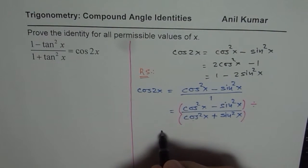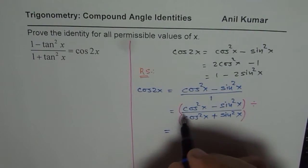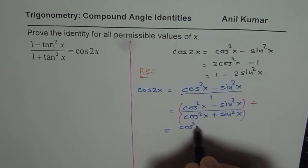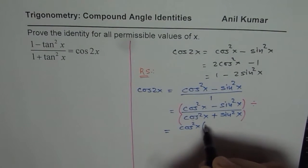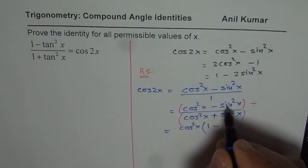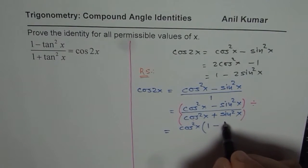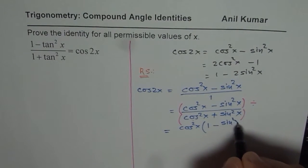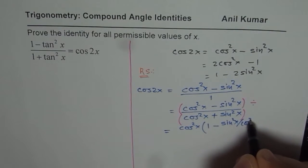So what we will do here is we will factor cos square x. So we can write this as equal to cos square x. And when you factor cos square x, you get 1 minus sin square x over cos square x. So we get sin square x over cos square x, is that okay?